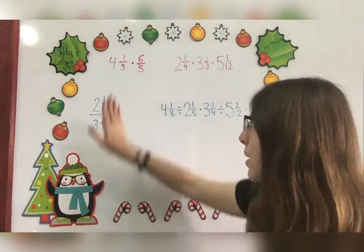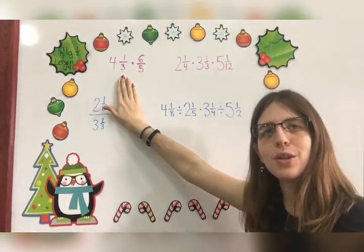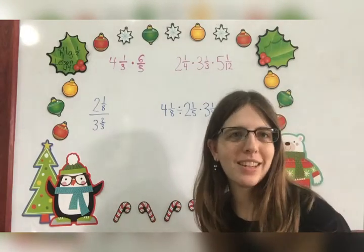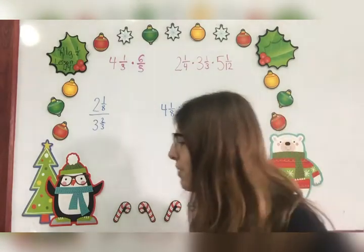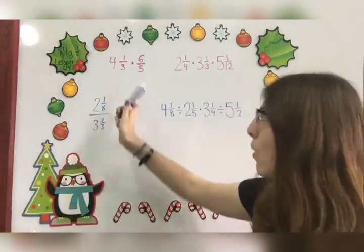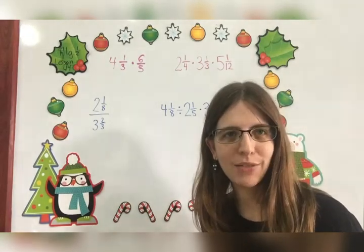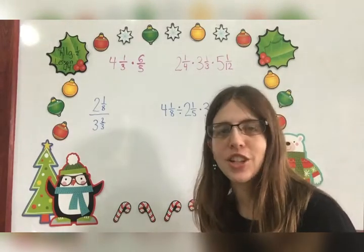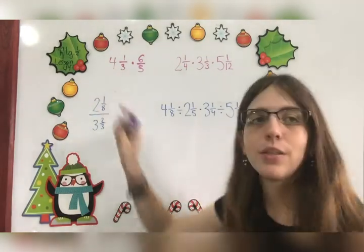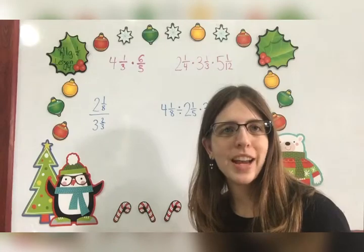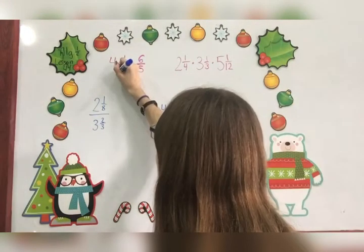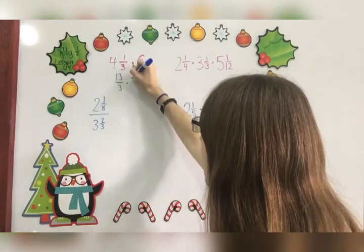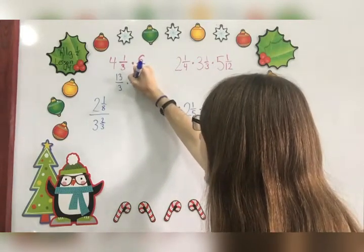When you have a mixed number, the easiest thing for you to do in order to multiply or divide is that you start by changing your mixed number into an improper fraction. So here I have 4⅓ times 6/5. I'm going to first change my 4⅓ into an improper fraction by multiplying 4 times 3 is 12 plus 1 is 13. That gives me 13/3.